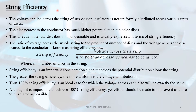String efficiency: what is string efficiency? The voltage applied across the string of suspension insulators is not uniformly distributed across the various units of disk suspension insulator. The disk nearest to the conductor has much higher potential than the other disks. This unequal potential distribution is undesirable and is usually expressed in terms of string efficiency.